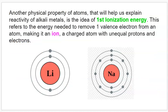So that was how we explain the overall trends for size. As we go down a group, we are increasing in size, and as we go across a period, we are decreasing in size. Another physical property of atoms that is going to be really important to chemistry is first ionization energy, which will also help us explain the reactivity of the alkali metals. As you go down the alkali metal group, the most left column on the periodic table, we saw that they got more and more reactive.